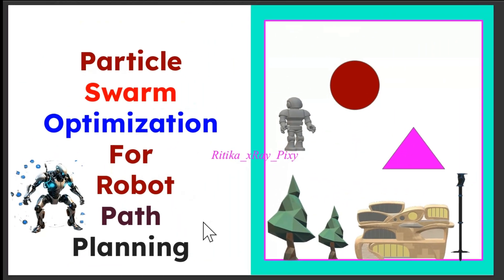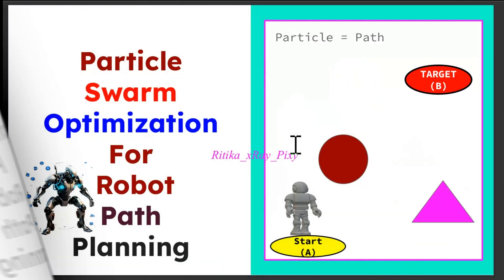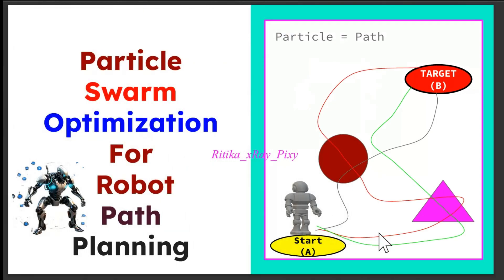Suppose we are using Particle Swarm Optimization (PSO) for robot path planning in a static environment with two fixed obstacles. How will the PSO particles explore the search space and find the shortest path for the robot to move from source to destination without collision? Each particle represents a possible path, and paths are evaluated based on two main criteria: path length and collision-free navigation.